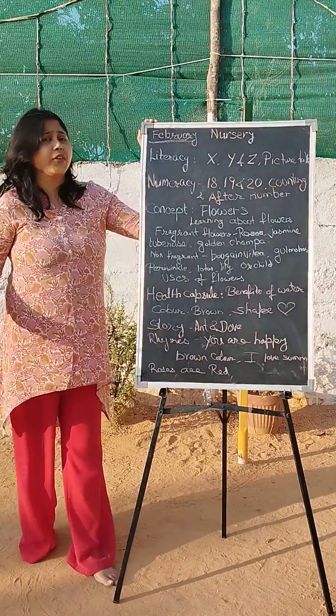The color you will learn about is brown, and the shape you will learn is the heart shape. The story this month is the ant and the dog story. The rhymes of this month are: 'If You're Happy and You Know It,' brown color rhymes, 'I Love Summer,' and 'Roses Are Red.'